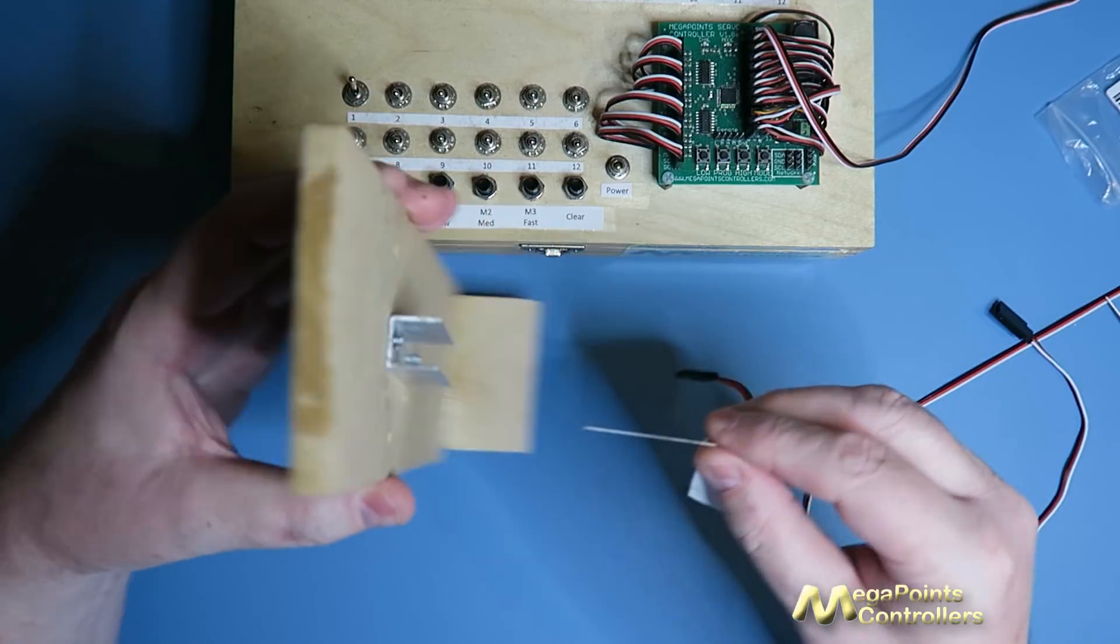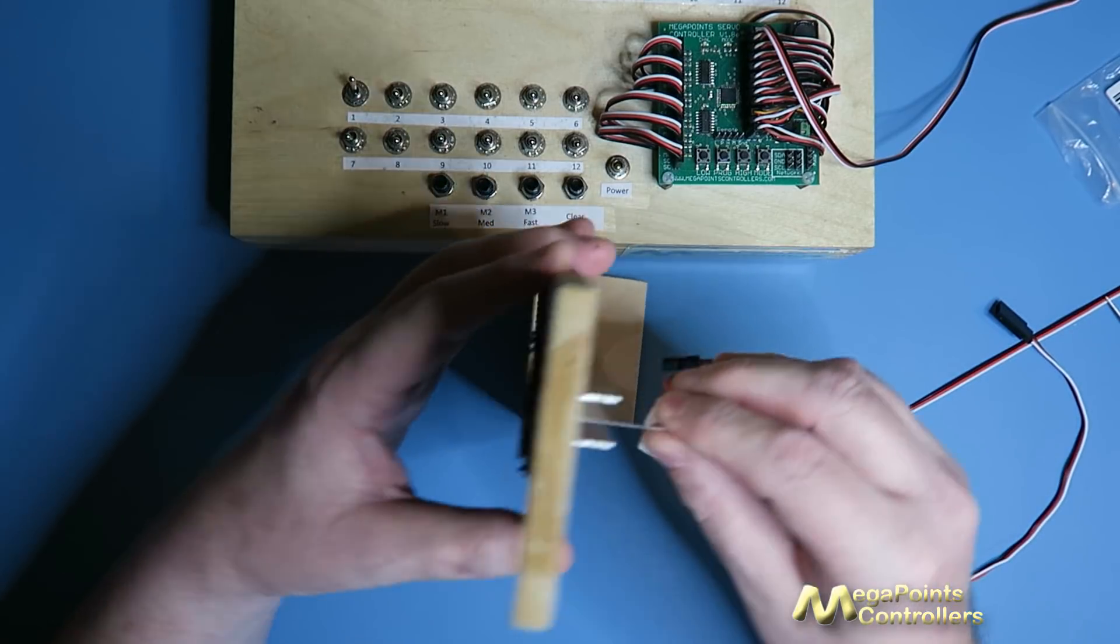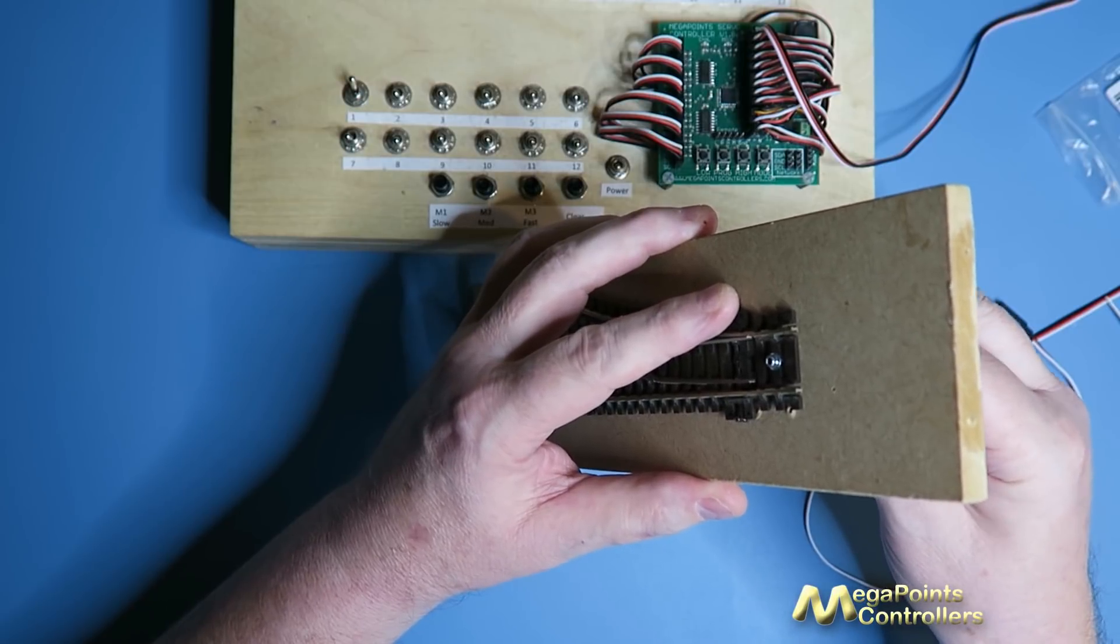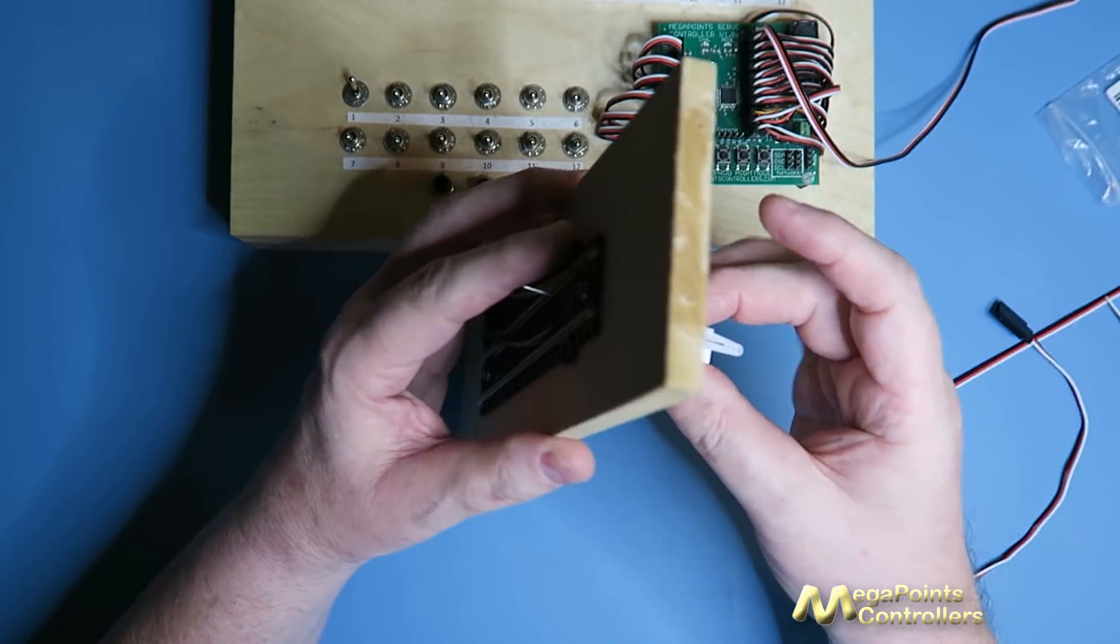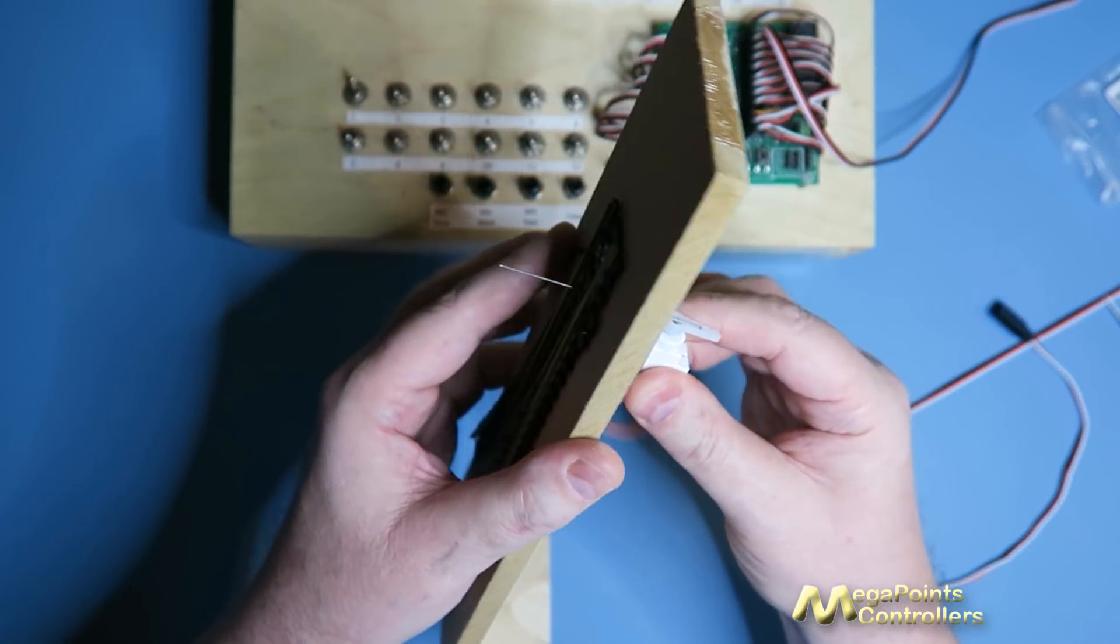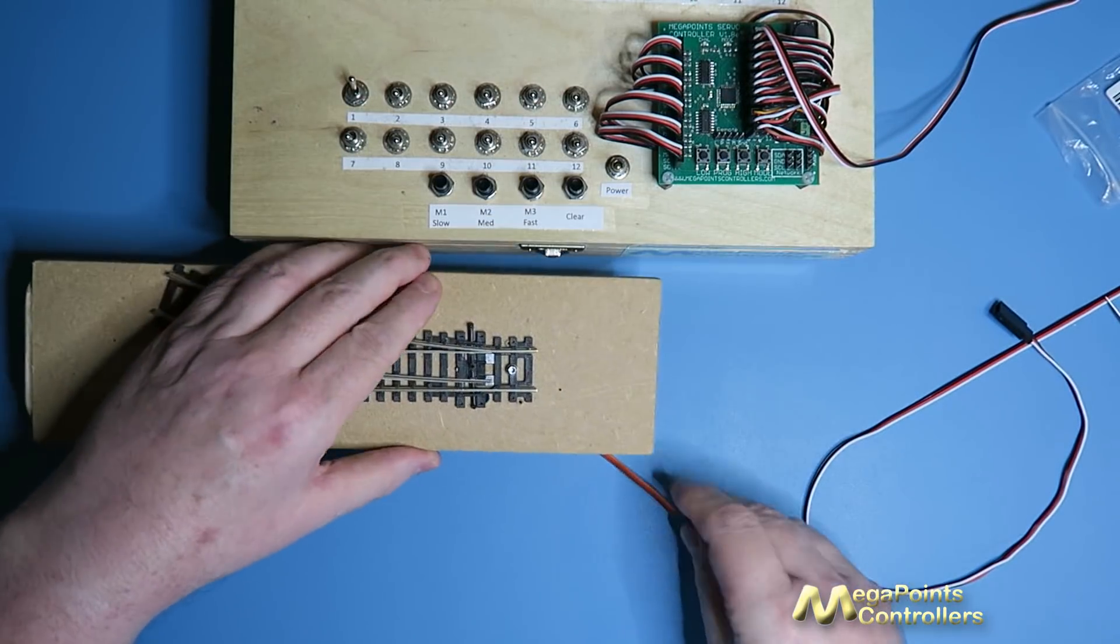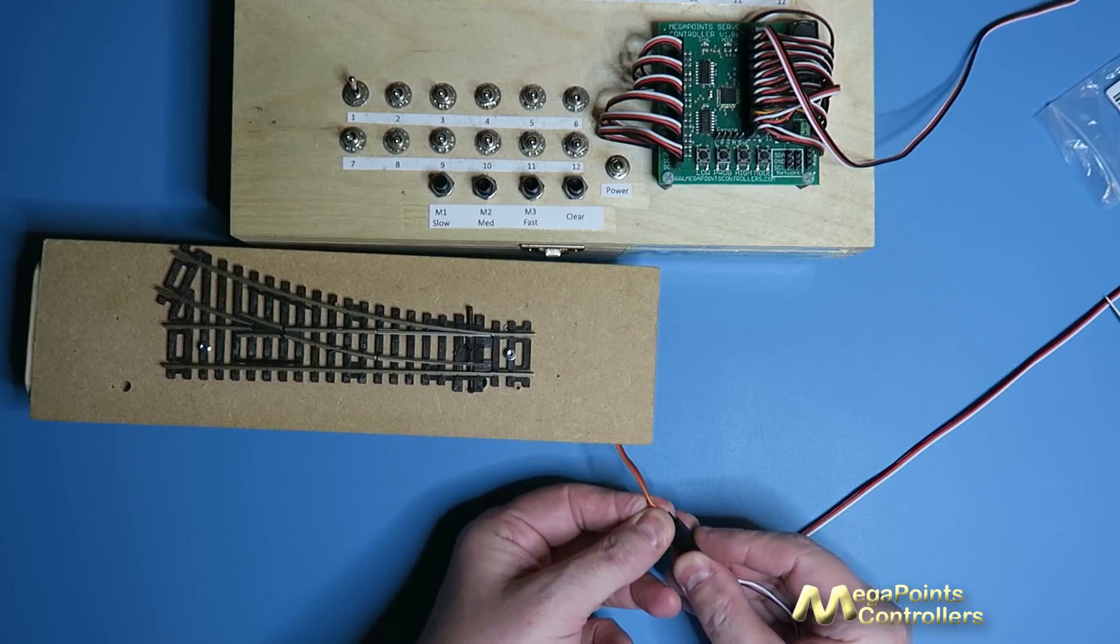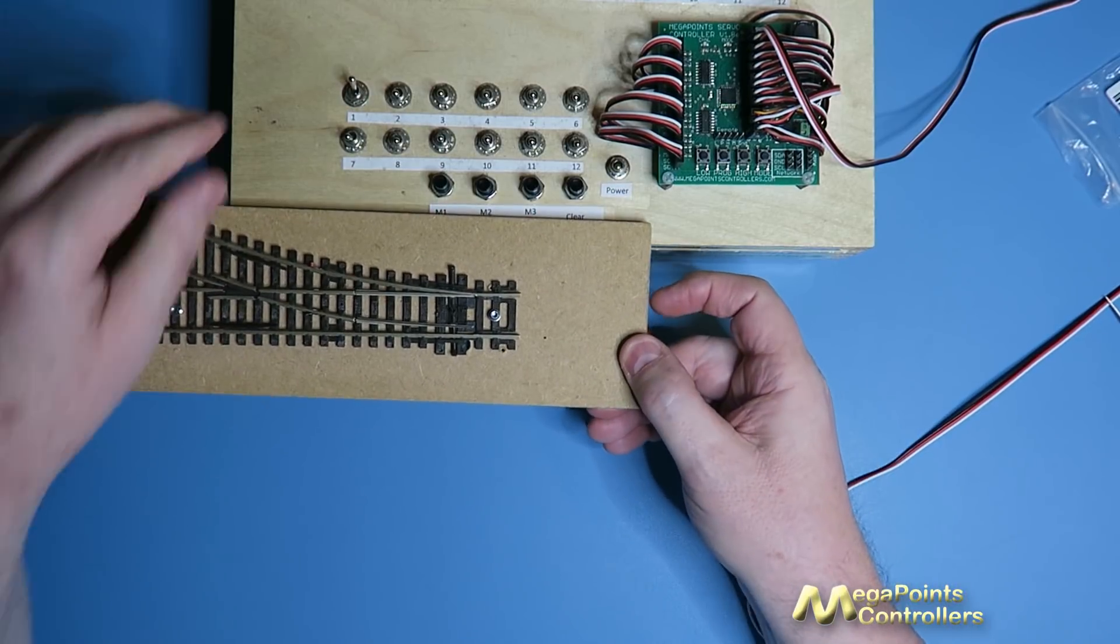Poke it through the tie bar. There we go. So everything is the same. Plug it into the same channel on the servo controller, flick a switch.